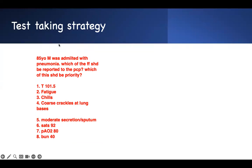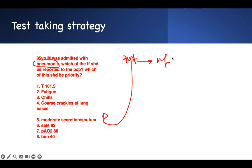Patient has pneumonia. Of course it's an infection, so they should have fever — temperature 101.5 is expected. Pneumonia makes you tired, so fatigue is normal. You have pneumonia, infection, chills are expected. Your lung is going to sound coarse with crackles. You're going to have secretions. Your saturation won't be 100.